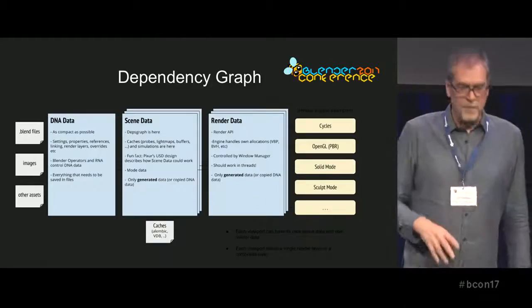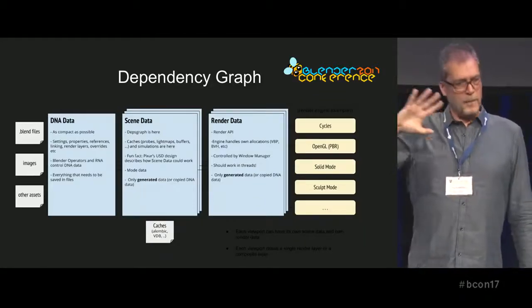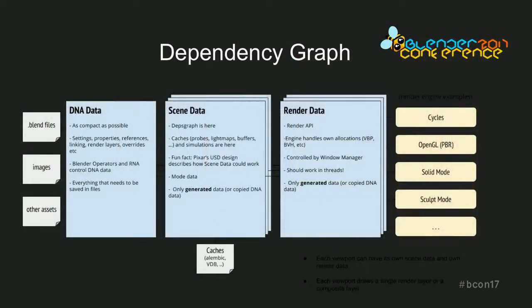This diagram shows the big picture of the design — how we know Blender already works and how we want it to work in the 2.8 period. We clearly separate a couple of data levels. The DNA data — which is the Blender file format, the way we encode data, the stuff that you save — is kept as compact as possible. Then you have scene data, which is managed by the dependency graph. The dependency graph ensures all the data in your files is copied, duplicated, or managed in a way that you can create your animations, edits, physics caches, and more.